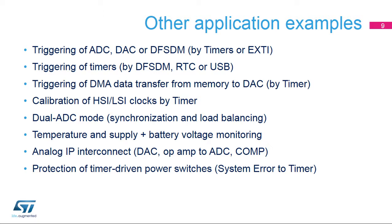The Interconnect Matrix is mostly used for triggering an ADC, DAC, or digital filter for a sigma-delta modulator through a timer event or an external interrupt; triggering a timer through an ADC or DF-SDM watchdog signal when a predefined threshold value is crossed by the analog input; triggering a DMA data transfer from memory to the DAC by a timer to allow frequency-controlled conversion; and calibrating HSI and LSI clocks, for example, measuring the external oscillator LSE frequency by a timer clocked by the calibrated internal oscillator.